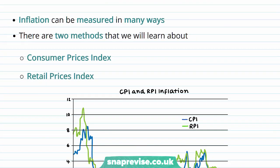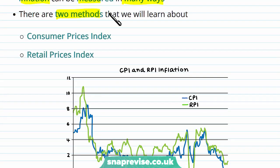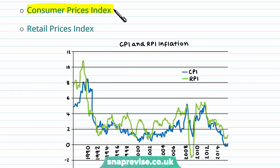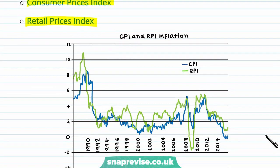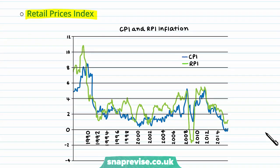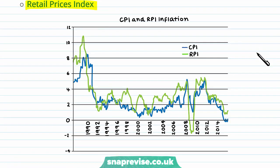The approach to measuring inflation can be done in many different ways. The two methods we'll learn about in economics are the Consumer Price Index and the Retail Price Index. The Retail Price Index exaggerates inflation more due to including mortgage repayments and covers the majority of households, so we see a lot more variability as a result of including something more expensive.